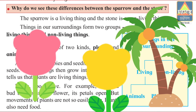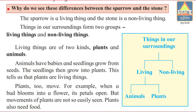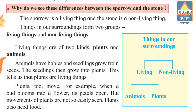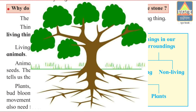For example, when a flower blooms, its petals open. The movement of plants is not so easily seen. Plants also need food, but plants do not move from place to place like animals do. Their roots hold them down in one place. This is the big difference between plants and animals.